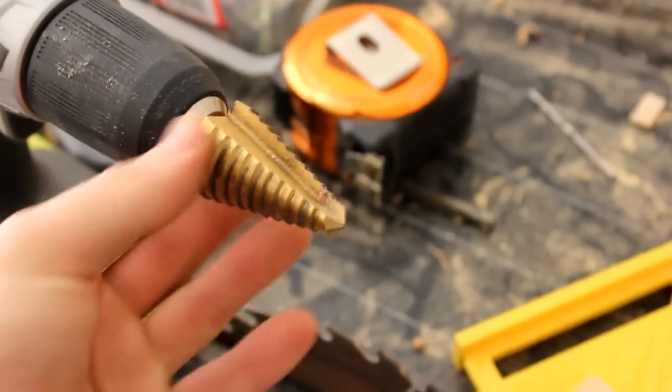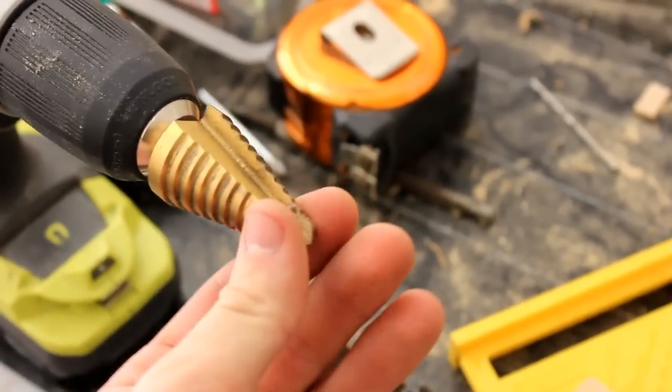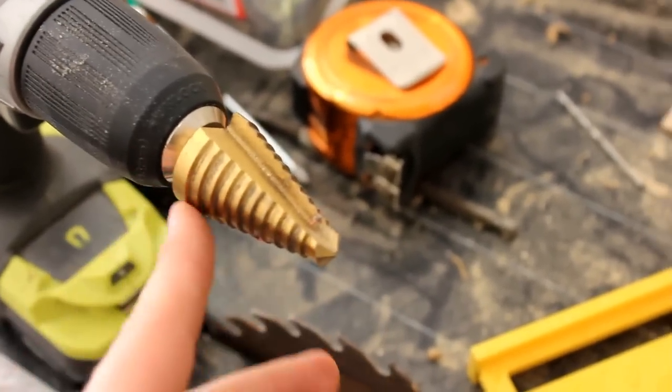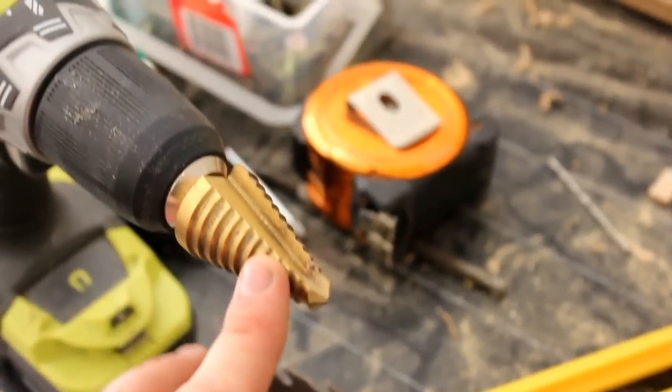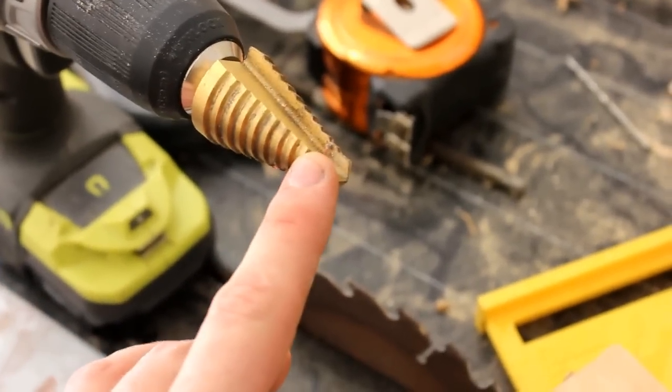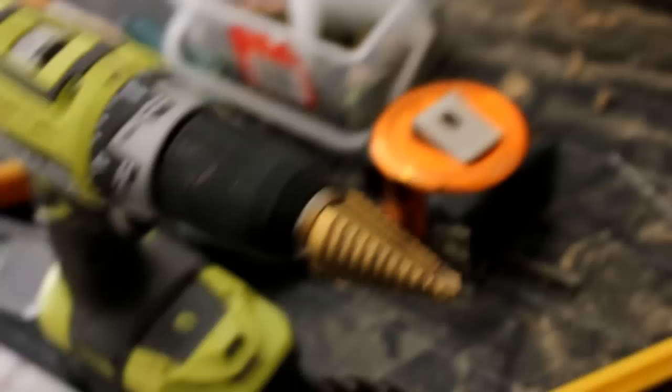Instead of buying a countersink drill bit, one thing I like to use is this step drill bit. You can do a hole up to this size, down to this size. But it works very well as a countersink as well if you're a bit careful with it. So I've countersunk all the holes. Just thought I'd let you know, save you a bit of money.